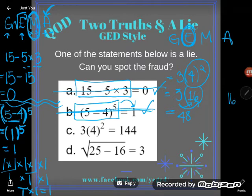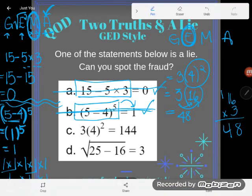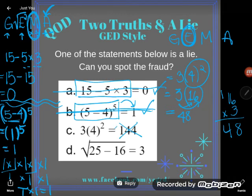If you don't believe me, you could come do it in some side work. You would not have a calculator on the GED if you were doing just a straight up order of operation problem. So clearly, three times four to the second power is not equal to 144. It's equal to 48. This was a lie. This is not true. There's the fraud.